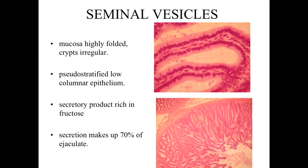The seminal vesicles are primarily a secretory structure. The pseudostratified low-columnar epithelial cells are secreting a product that has a variety of factors, but probably the most important is that it's very rich in fructose. The fructose makes up about 70% of the total ejaculate volume. This is important because the spermatozoa have mitochondria present within the midpiece collar, and they need a sugar product to be metabolized for ATP production so the flagella can continue functioning, enabling delivery of spermatozoa to the region where they can fertilize the egg.